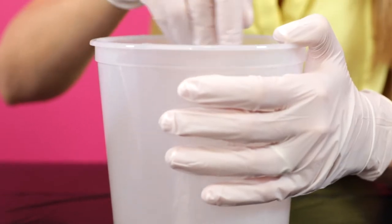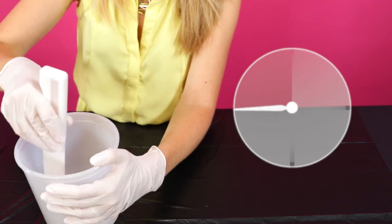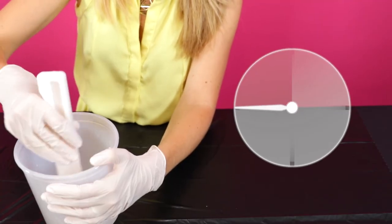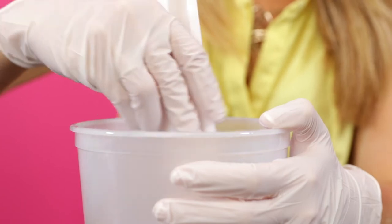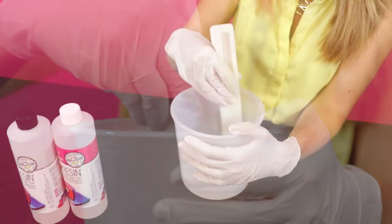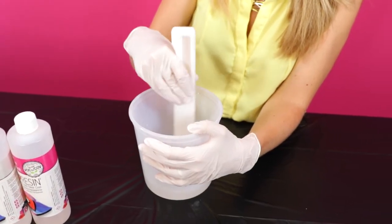Once you've mixed both the resin and hardener together, you'll have about 45 minutes of working time to spread it before it starts to cure. If your mixture is warmer than room temperature, your working time and cure time will be decreased.